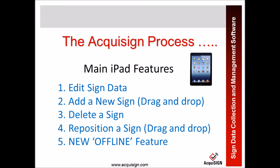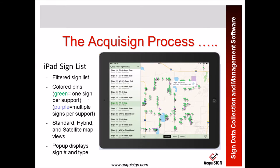What are the main iPad features? You can edit sign data, add a new sign, delete a sign, reposition a sign, or use the new offline feature. This is a picture of the iPad map, showing a list of signs. In the online portion, the pins in green indicate one panel per support, whereas the purple indicate multiple panels on a support structure. This can also be viewed in satellite or hybrid mode.